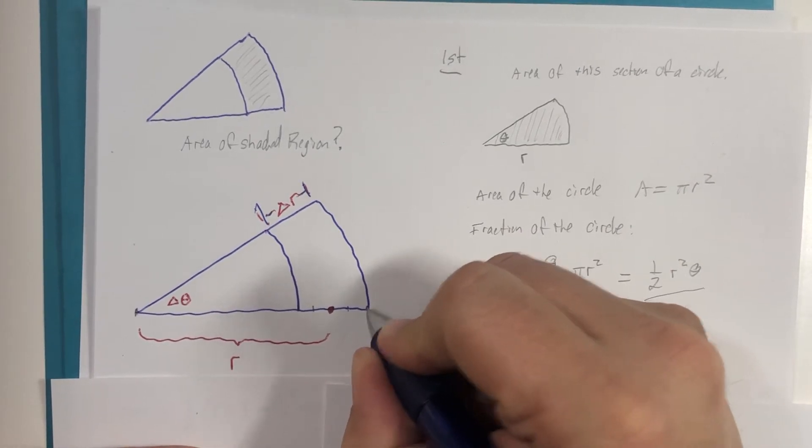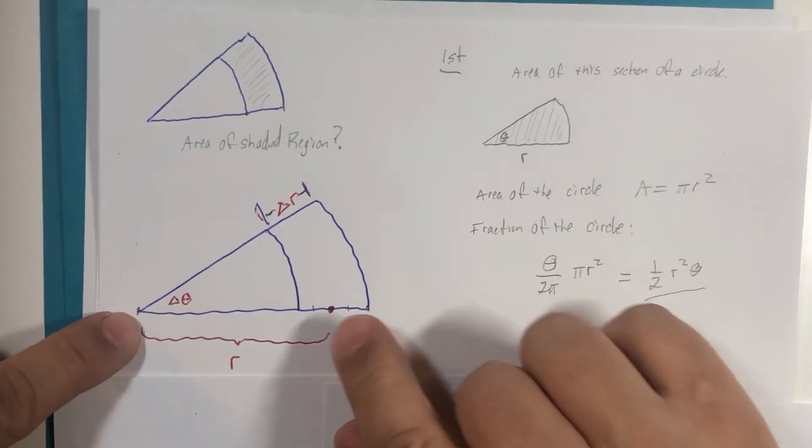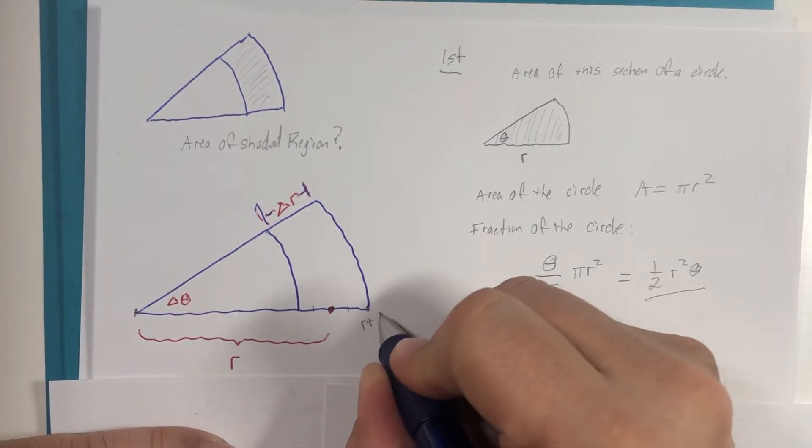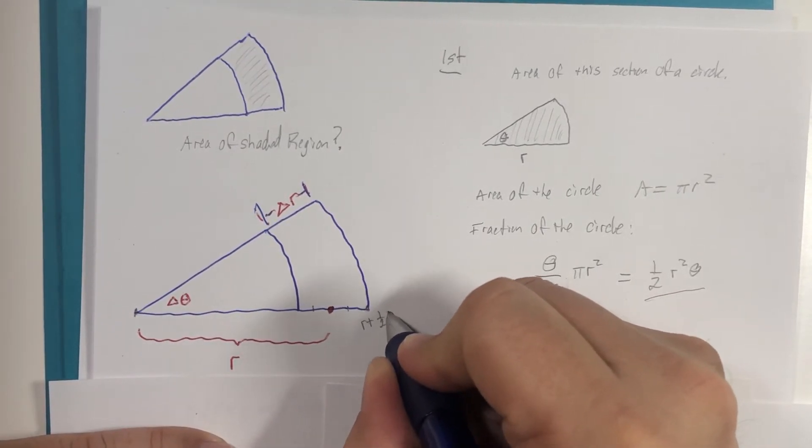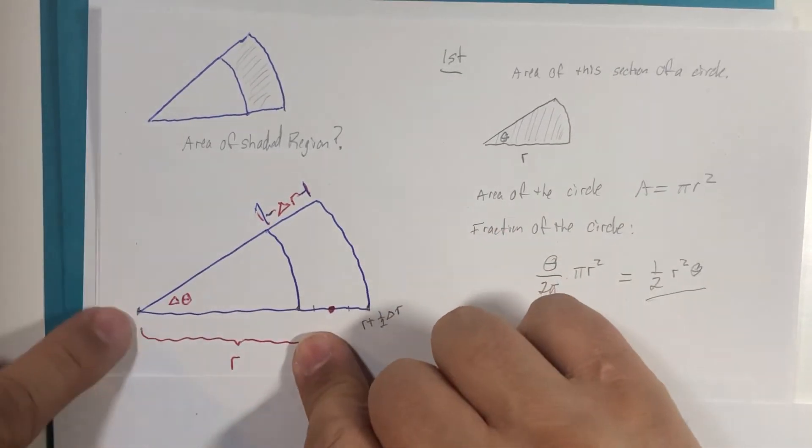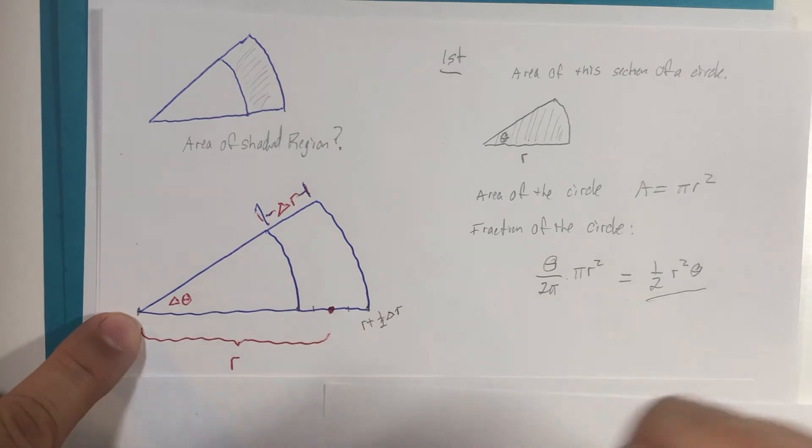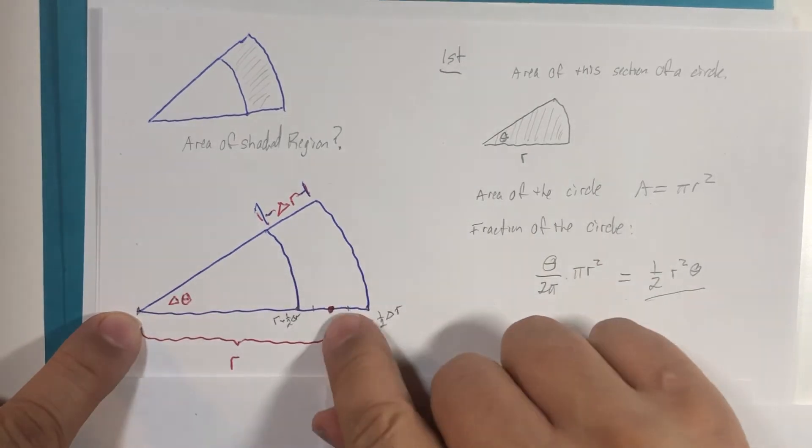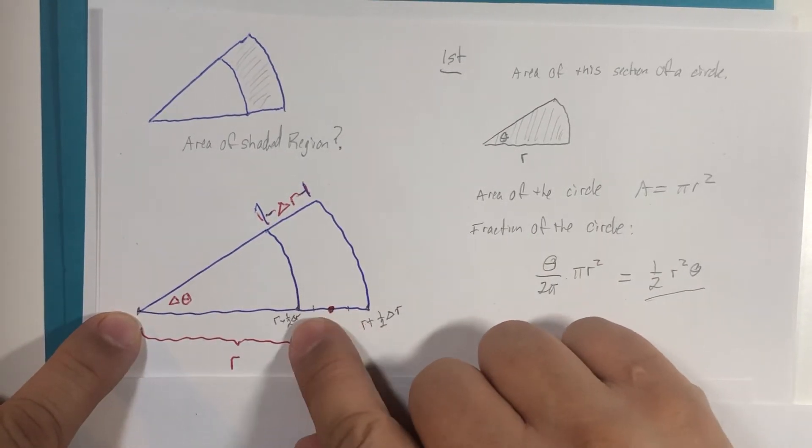So this distance from here to here would be r plus half of Δr, but then from the origin to this point would be r minus the half of Δr, because we're going to subtract the half delta.